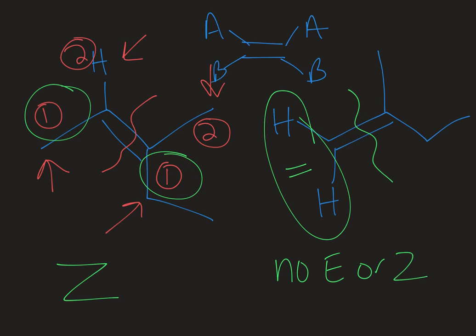So this has been a look at assigning E and Z stereochemistry for alkenes. If you found this video helpful please like, subscribe, and share with your friends. Thanks!